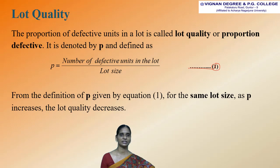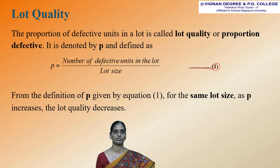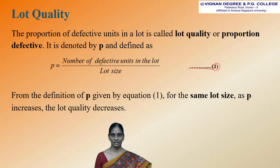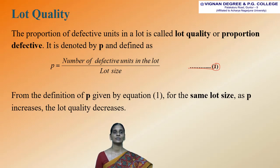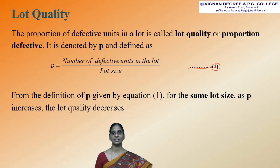Sample size is denoted by small n. The next term is lot quality. The proportion of defective units in a lot is called lot quality or proportion defective. It is denoted by small p and is defined as: p equals number of defective units in the lot divided by lot size. This is treated as equation 1.